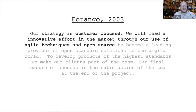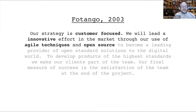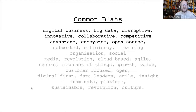Their 2003 strategy was: 'Our strategy is customer focus. We will lead an innovative effort in the market through our use of agile techniques and open source.' They'd heavily adopted Extreme Programming, written by Kent Beck. The problem was he'd pinched the strategy from another company and changed a few words. So he started recording other CEOs talking about strategy, listening for what he called 'business-level abstractions of a healthy strategy' — or BLAST for short. Common ones included: digital business, big data, disruptive, innovative, collaborative, competitive advantage, ecosystem, open source.